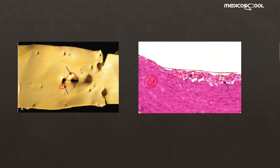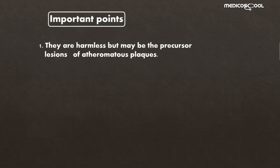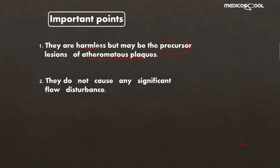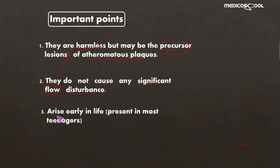Important points about fatty streaks: First, they are harmless but may be precursor lesions for the formation of atherosclerotic plaque. Second, they do not cause any significant flow disturbance, in contrast to atherosclerotic plaque. Third, they arise early in life and may be present in most teenagers as harmless lesions.